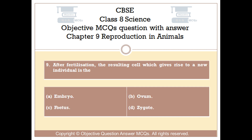Question number 9. After fertilization, the resulting cell which gives rise to a new individual is: Option A: Embryo. Option B: Ovum. Option C: Fetus. Option D: Zygote.